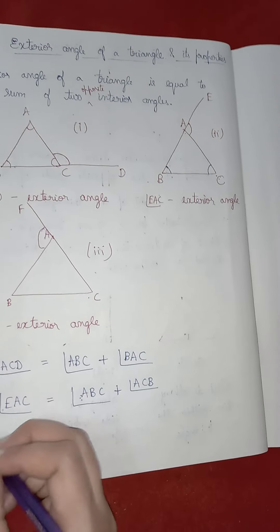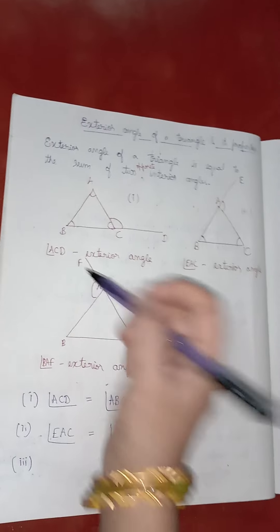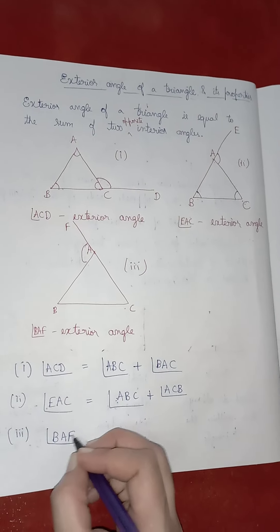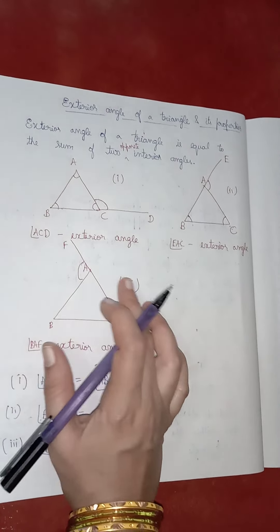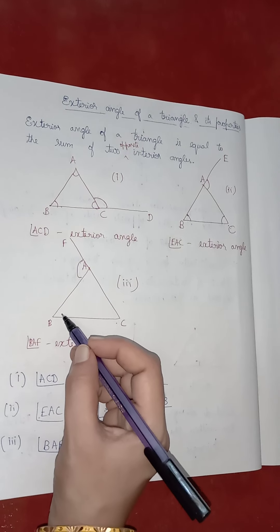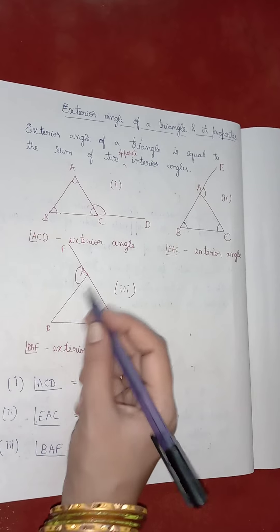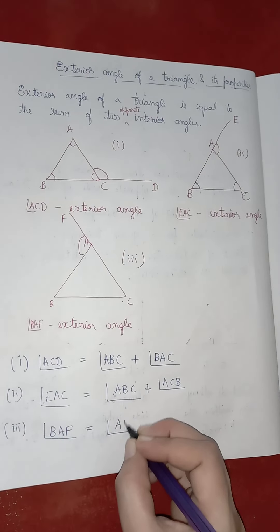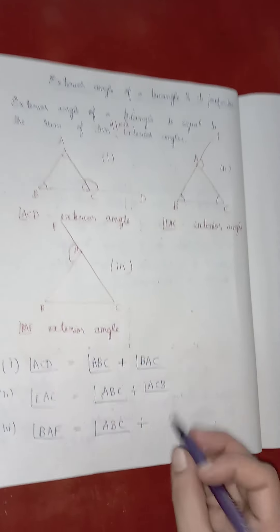In figure 3, the exterior angle is angle BAF. That is equal to the sum of the opposite interior angles: angle ABC plus angle ACB.